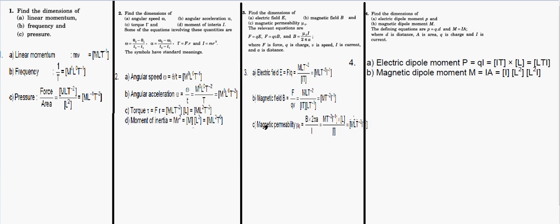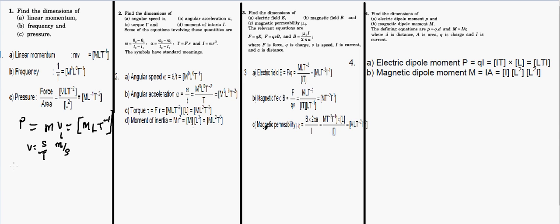For linear momentum, the formula is p = mass × velocity. Mass has dimension M. Velocity is distance upon time, so its dimension is LT⁻¹. Overall, the dimension of linear momentum is MLT⁻¹. For frequency, it is the number of revolutions per unit time, equal to 1 over time period.